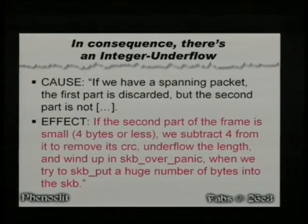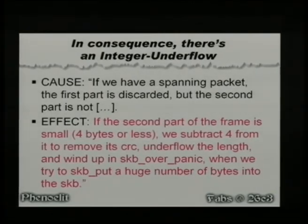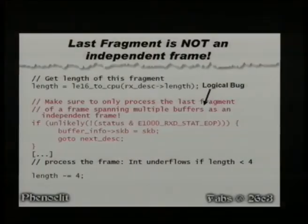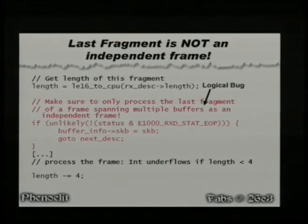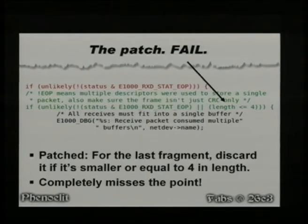What's actually happening is we're taking the last part of a spanning frame and interpreting it as an independent new frame — this used to be payload, and now we're saying it's an independent frame. That's the actual bug. The code has a comment that says 'process the last fragment,' and down there is the integer underflow. The patch? All they did was check whether the length would be smaller than 4 bytes. Epic fail — they didn't even understand the bug and completely missed the point.